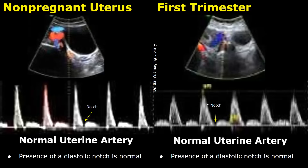Over here is a uterine artery in a gravid uterus of the first trimester. The waveform is almost similar but has slightly lower resistance, and the peaks are slightly broader. This waveform also contains an early diastolic notch, which is also considered normal in a first trimester pregnancy. In normal cases, this notch usually disappears by 13 weeks.